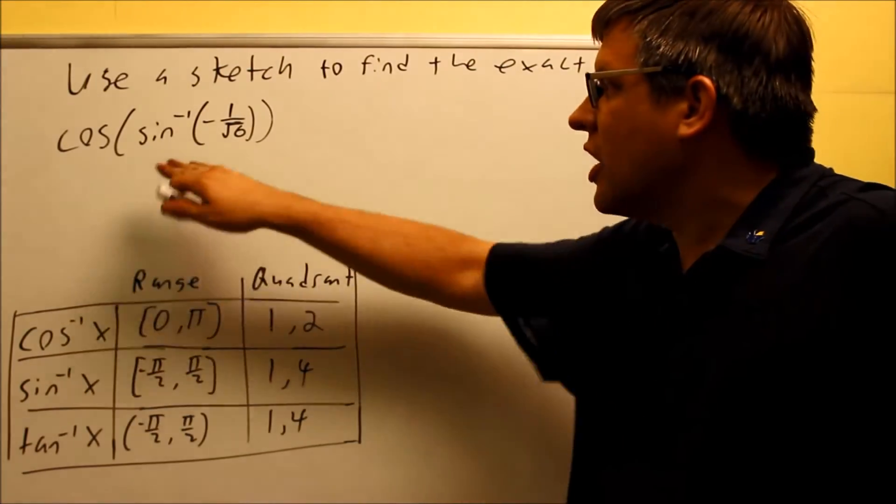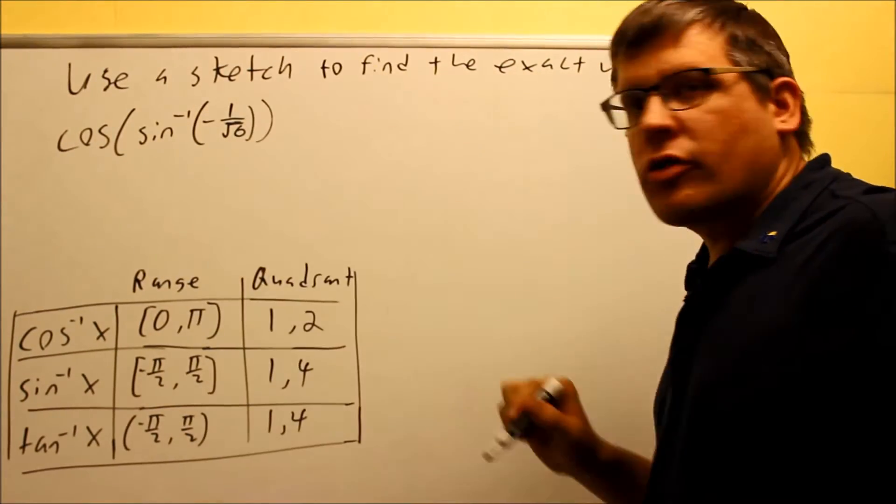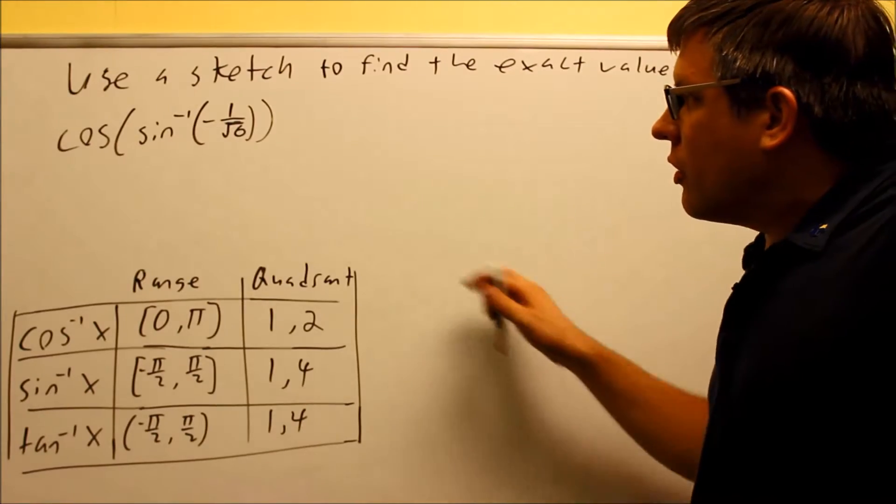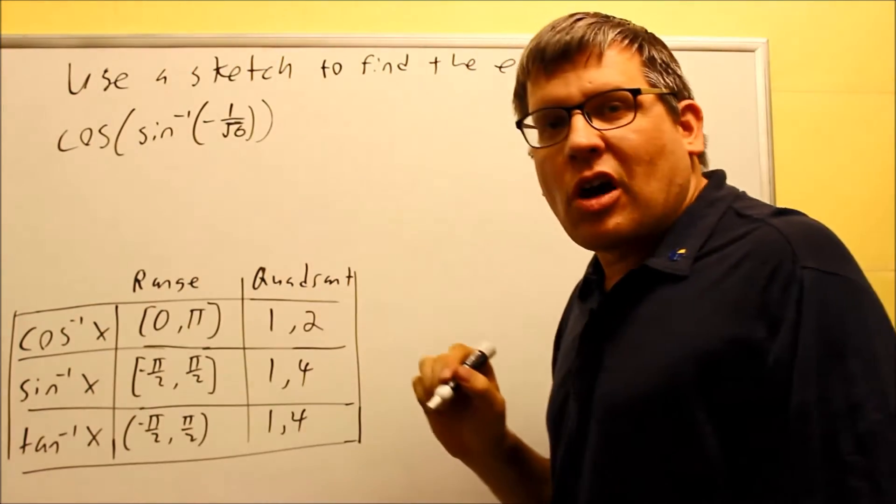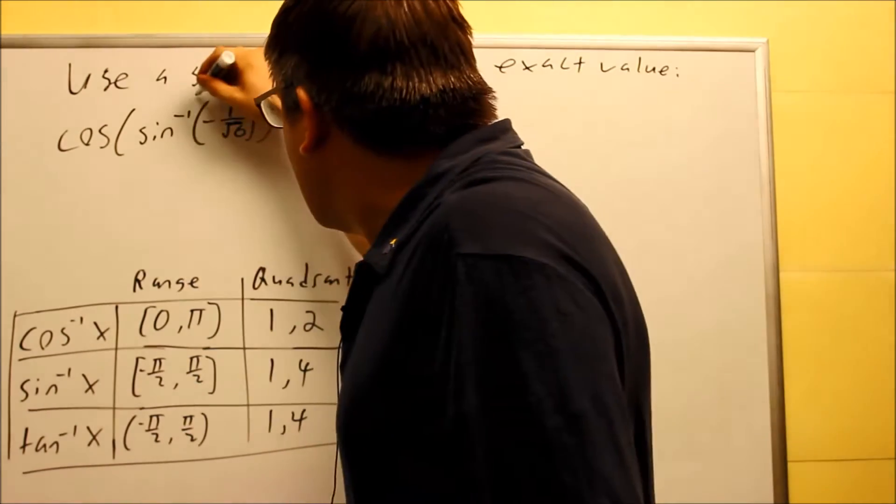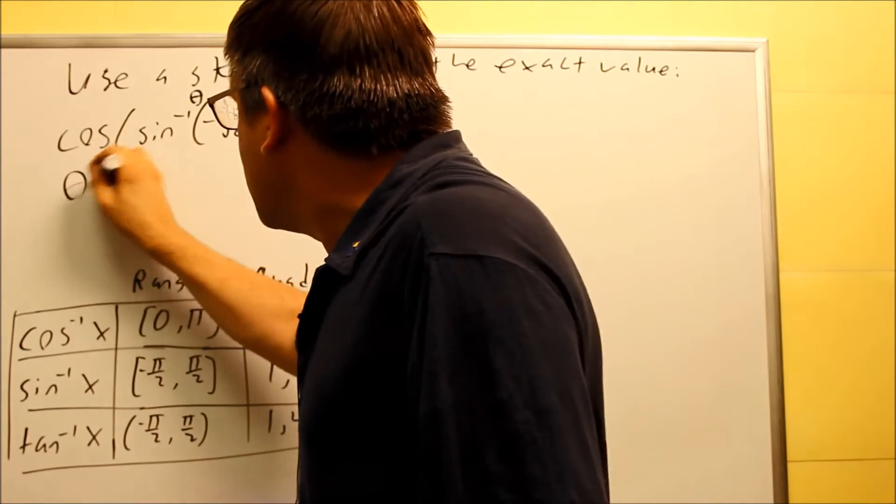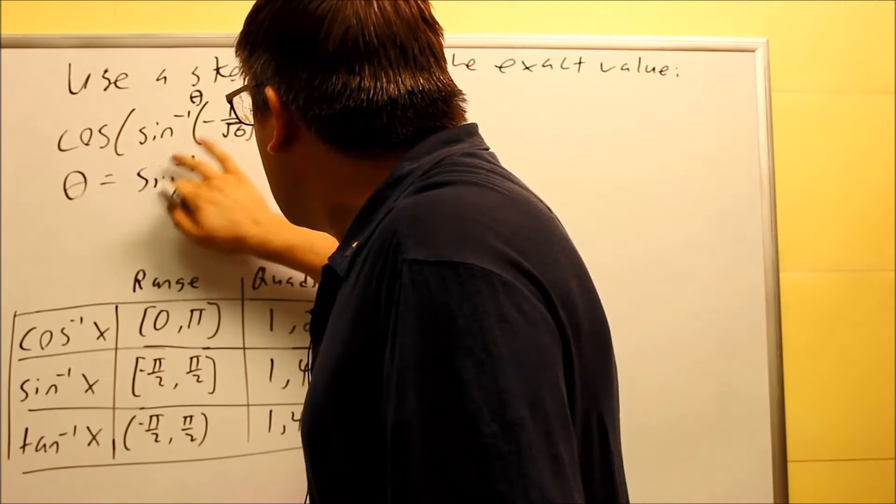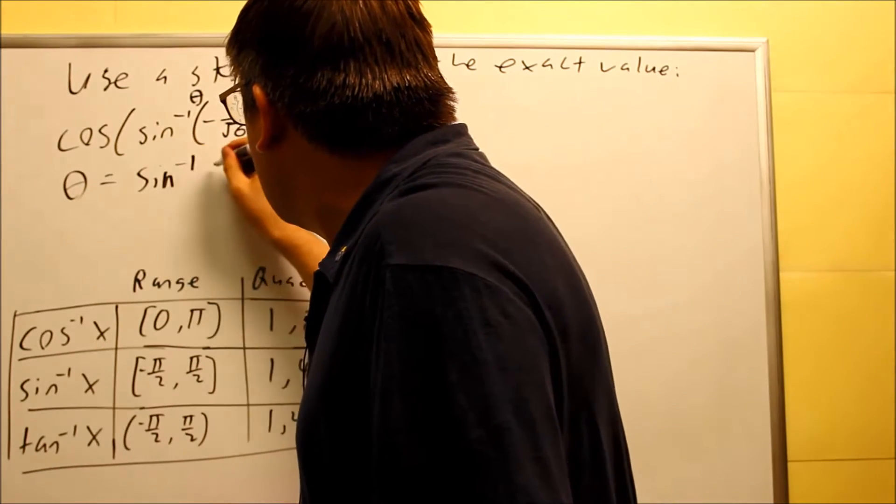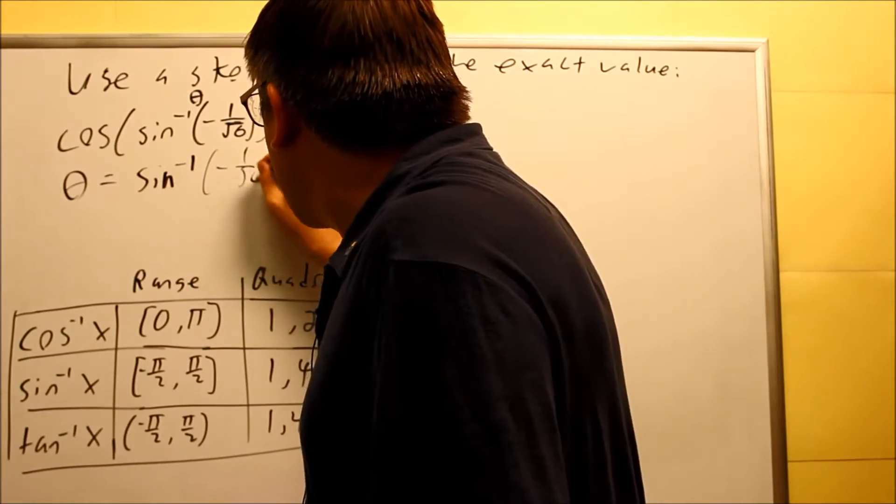Okay, next problem, we're going to do cosine of inverse sine negative 1 over square root of 6. So the first thing you want to do, again, is the part that's on the inside, this represents our theta. So we can say that the inside part here, theta, theta is equal to inverse sine of negative 1 over root 6.